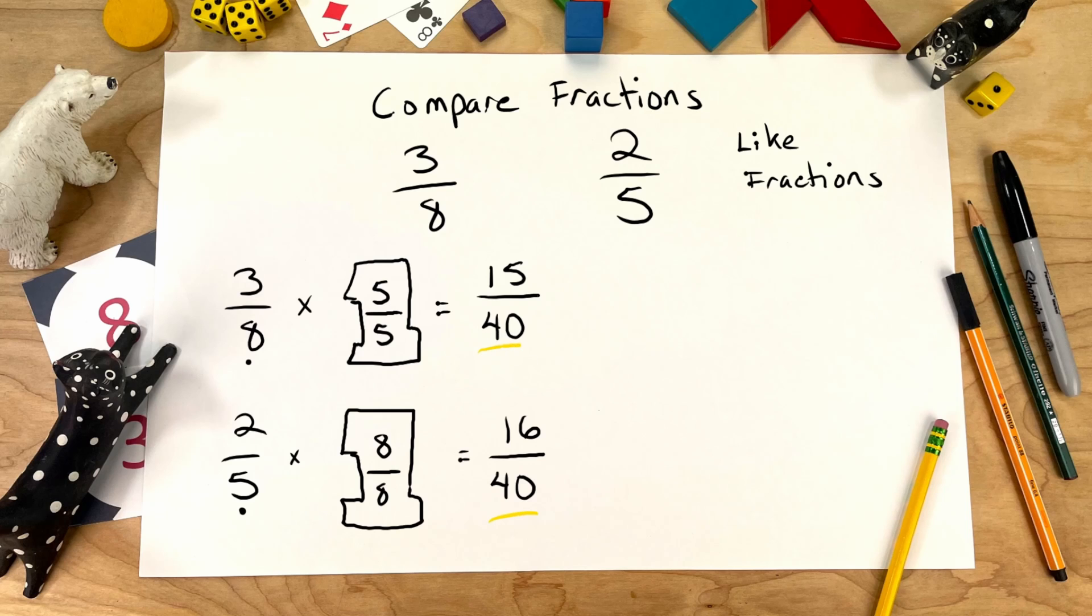Again, we have like denominators, which is what we want to have. Now we can compare 15 fortieths to 16 fortieths. And when we do that, we're really comparing 3 eighths to 2 fifths.